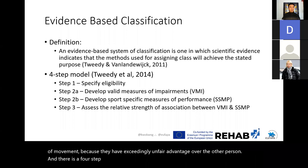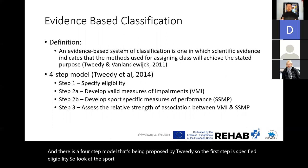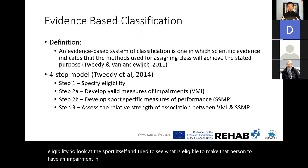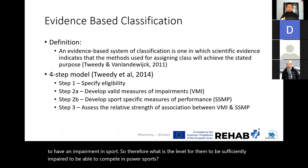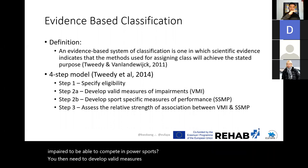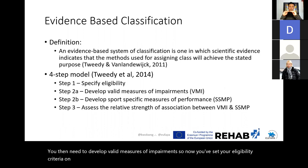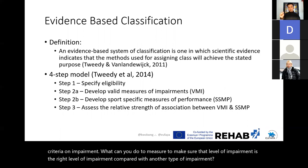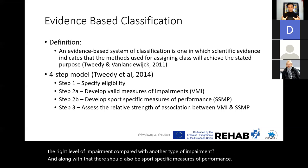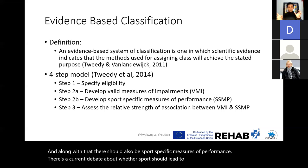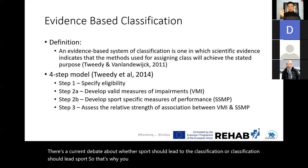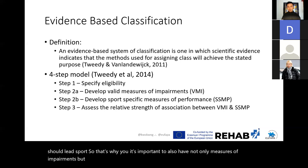There is a four-step model proposed by Tweedy. The first step is to specify eligibility — look at the sport and see what is needed to have an impairment, meaning what level of impairment sufficiently qualifies them to compete in parasports. The second step is to develop valid measures of impairment. Along with that, there should be sport-specific measures of performance. There is a current debate about whether sport should lead to classification or classification should lead to sport — which is why it's important to have both measures of impairment and sport-specific measures of performance.